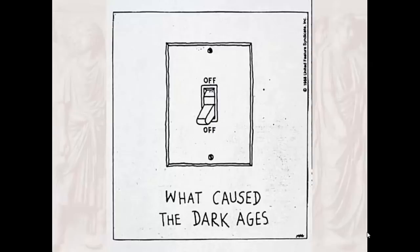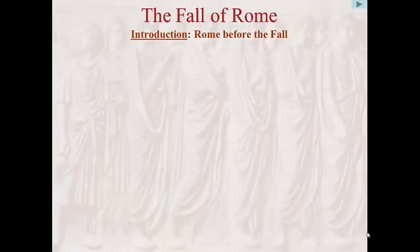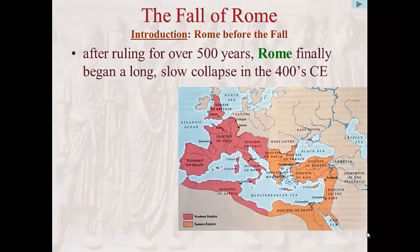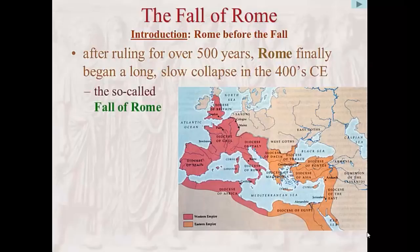Chapter 8: The Fall of Rome — Facts and Fictions. Introduction: Rome Before the Fall. After nearly half a millennium of rule, the Romans finally lost their grip on Europe in the fifth century, the 400s CE. Their decline left in its wake untold devastation, political chaos, and one of the most fascinating and problematical issues in history: what caused the fall of Rome? The problem we'll tackle in this chapter.